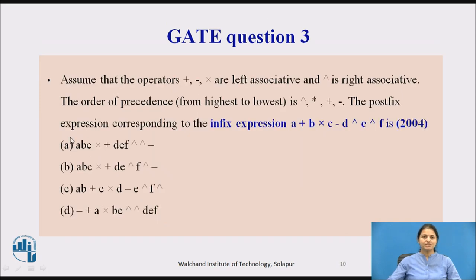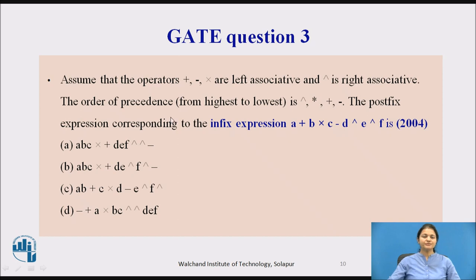The third question (2004): assume that operators plus, minus, and multiplication are left-associative and power is right-associative. The order of precedence from highest to lowest is power, multiplication, addition, and minus. Find the postfix expression corresponding to the infix expression A + B * C - D ^ E ^ F.